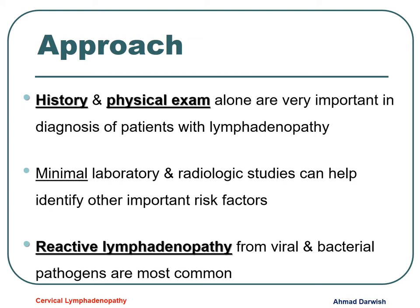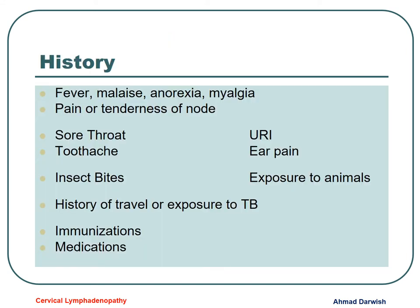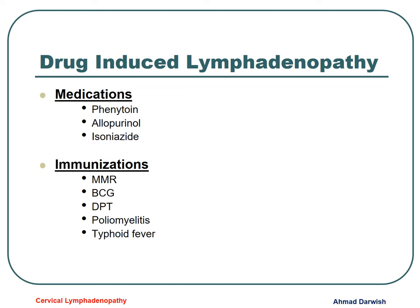Reaching now the approach to cervical lymphadenopathy: history and examination are very important in diagnosis, and sometimes we need minimal lab work and radiology to reach diagnosis. The most common cause is reactive lymphadenopathy to viral and bacterial infection. In the history, we ask about fever, malaise, anorexia, myalgia, pain and tenderness in the node, sore throat, toothache, ear pain, upper respiratory tract manifestations, exposure to insect bites or animals, travel history especially to tuberculosis-endemic areas, history of immunization, and drug intake such as phenytoin, allopurinol, isoniazid, or vaccines like MMR, BCG, DPT, poliomyelitis, typhoid, and so on.